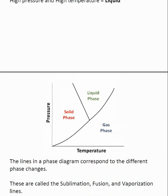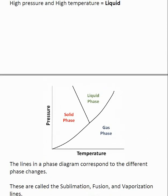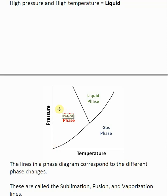Here is a typical phase diagram — not for any particular substance. From the left-hand corner, a line comes up and splits into a Y shape. The liquid phase is inside the middle part of the Y, the solid is to the left, and gas is to the right. At high temperature and low pressure we have gas; at low temperature and high pressure we have solid; and in between is the liquid phase.